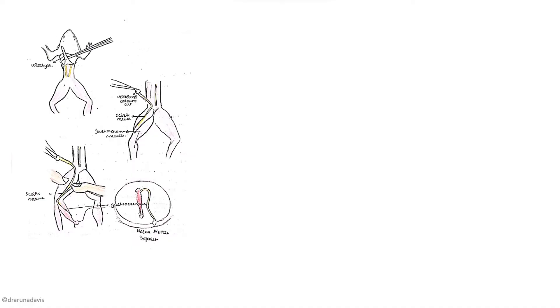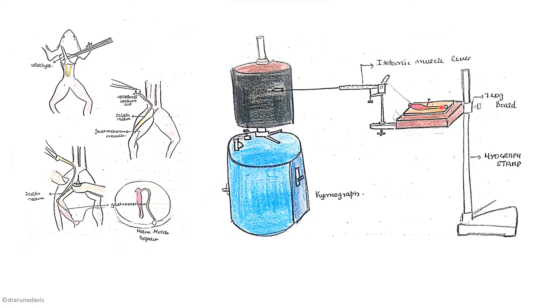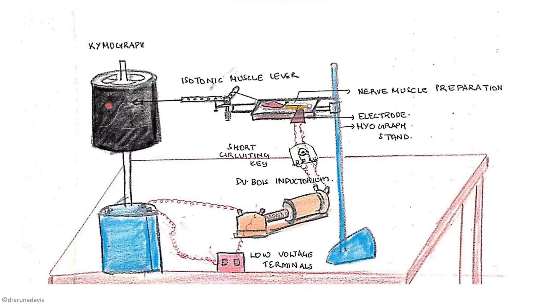Before moving on to the graphs, we will first see how these experiments are done. These experiments are done on the nerve muscle preparation of a frog — we dissect the sciatic nerve and the gastrocnemius muscle, make an isolated nerve muscle preparation, mount it on a frog board, and connect it to a lever. When we stimulate the nerve, the muscle contracts and that contraction is transmitted to the lever, which records on the kymograph. We use low voltage induced current via an electrode, which transmits an impulse to the muscle. This is the basic setup for almost all skeletal muscle experiments of frog.